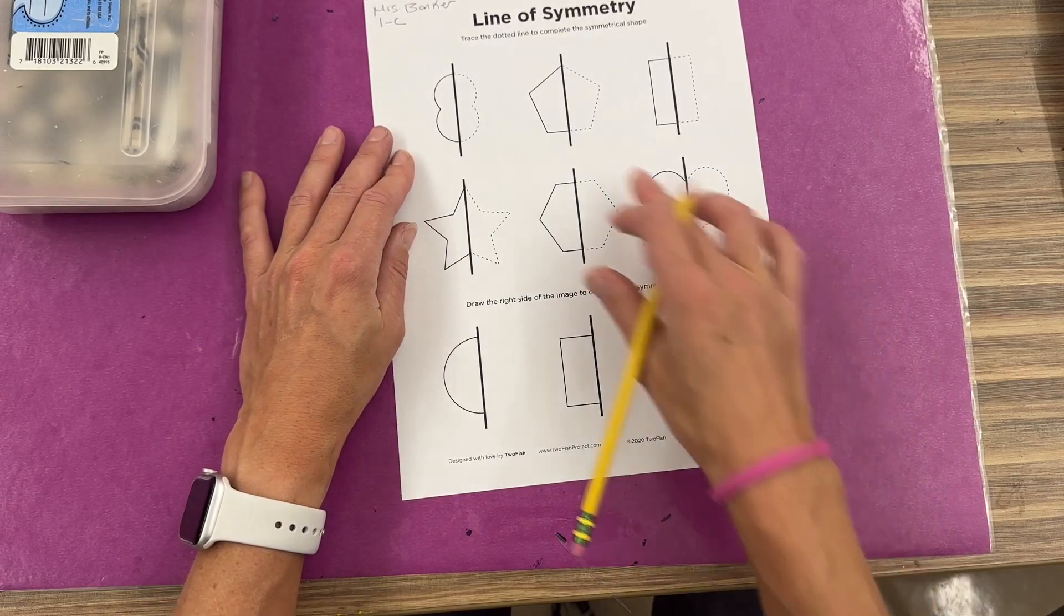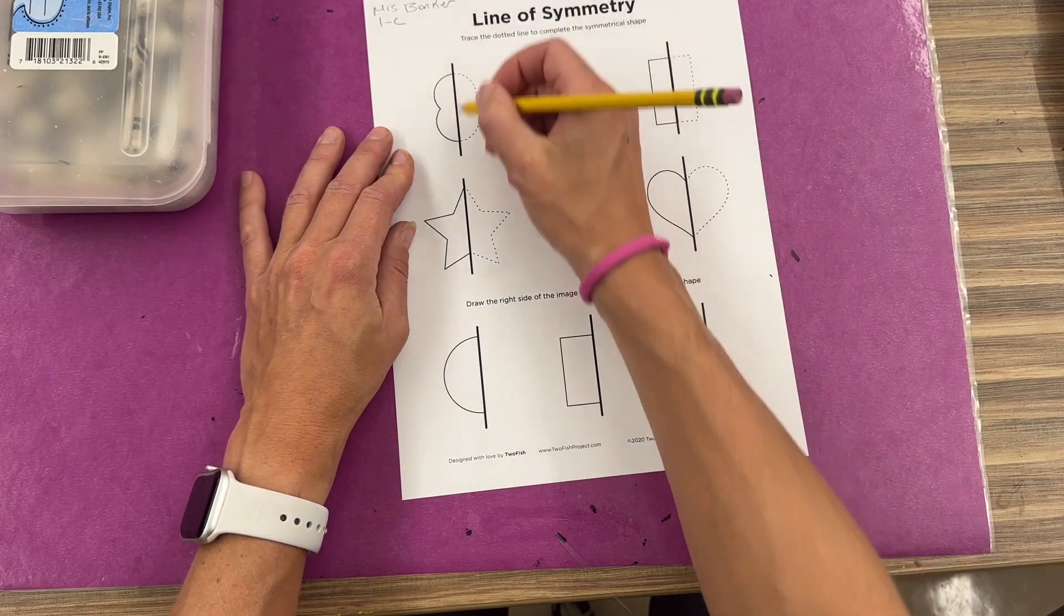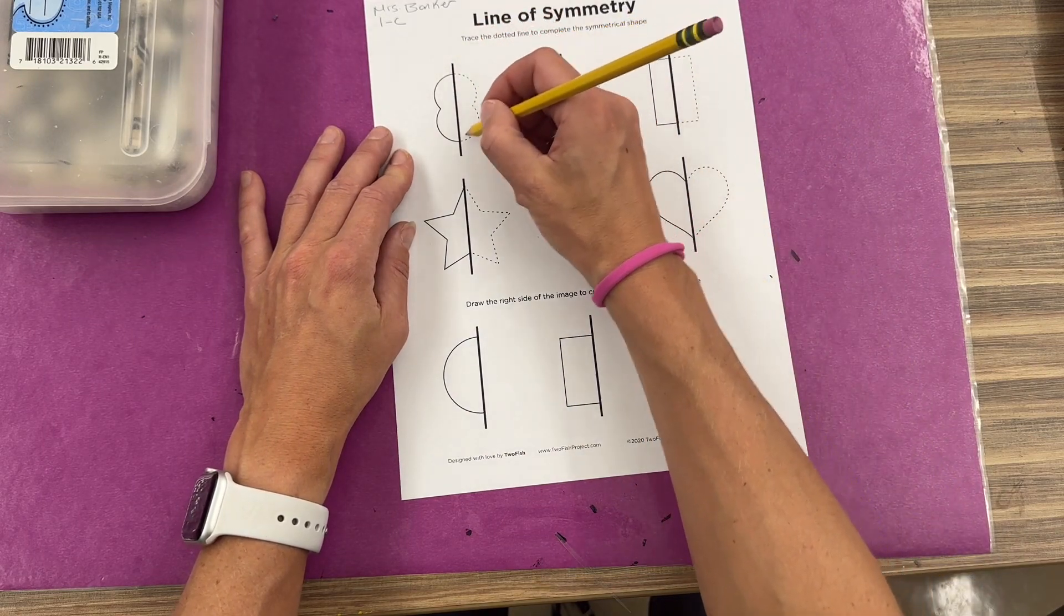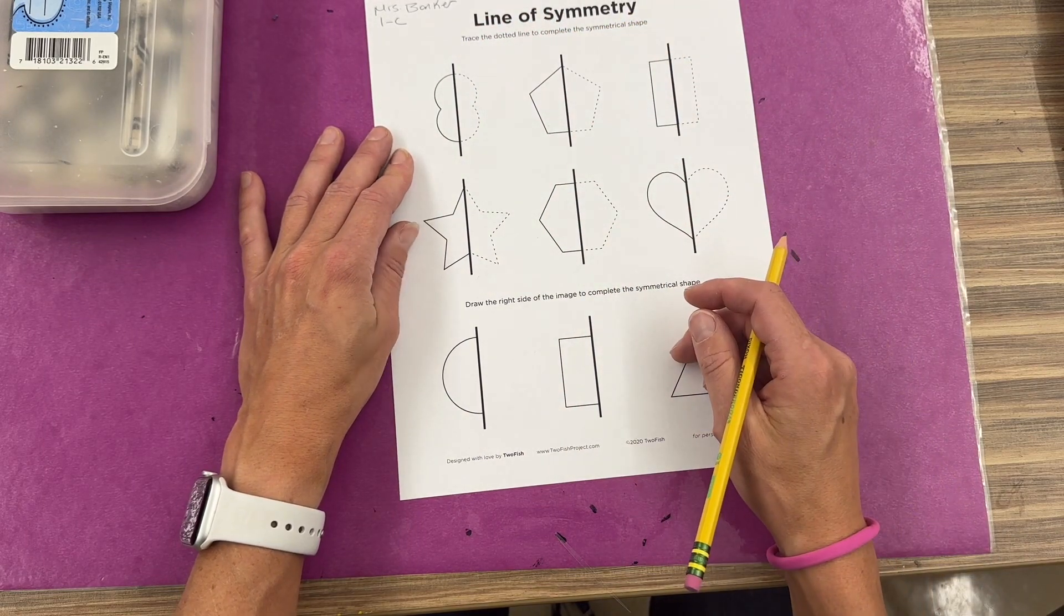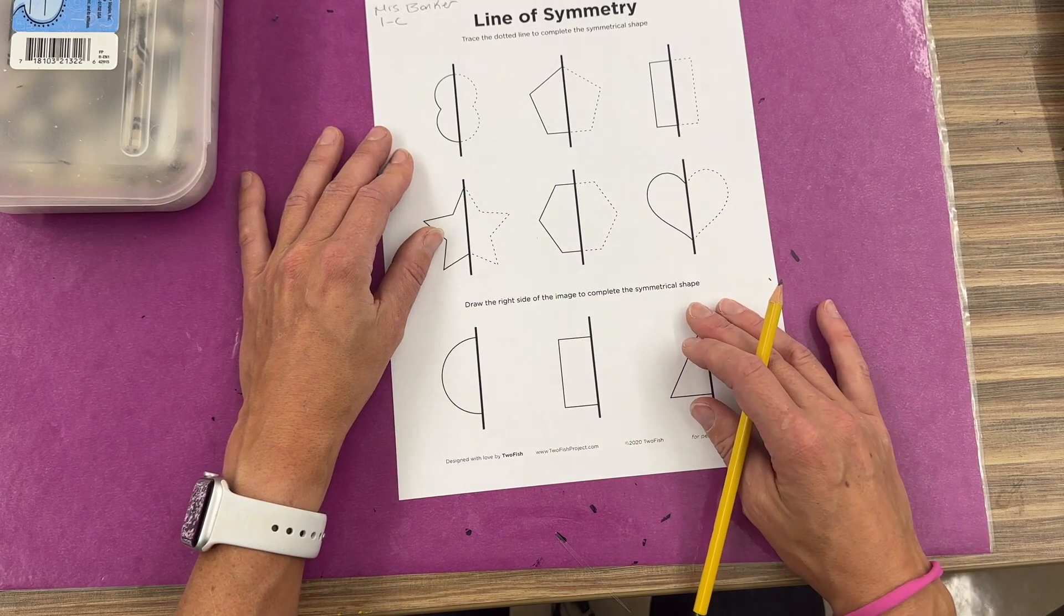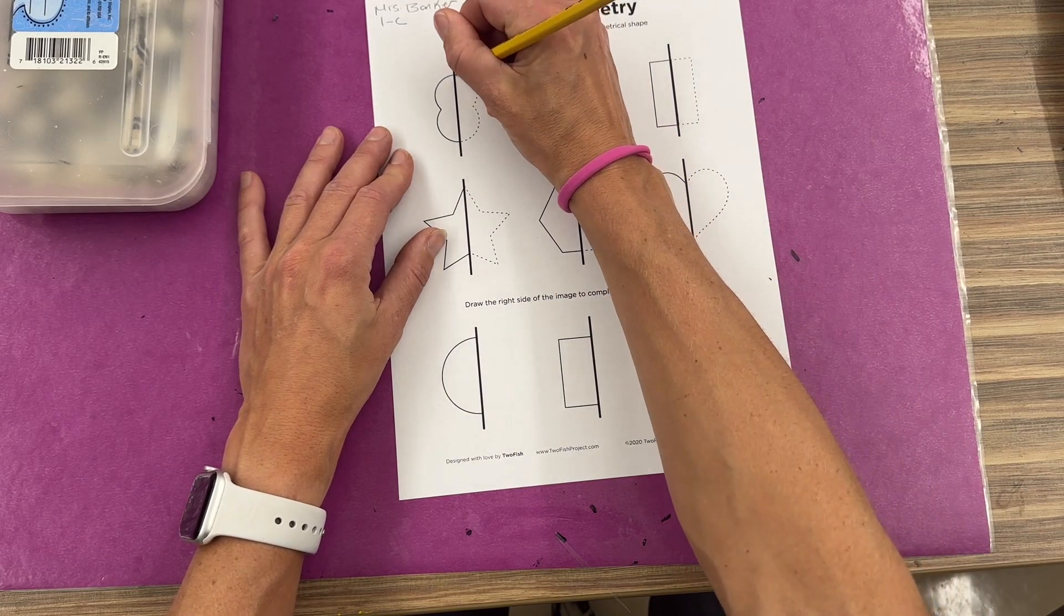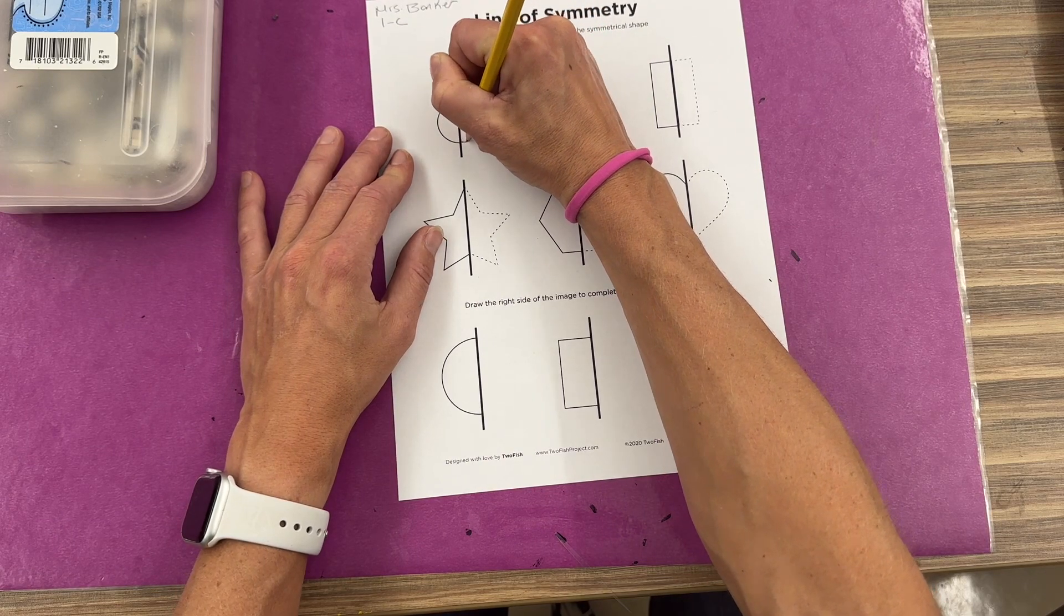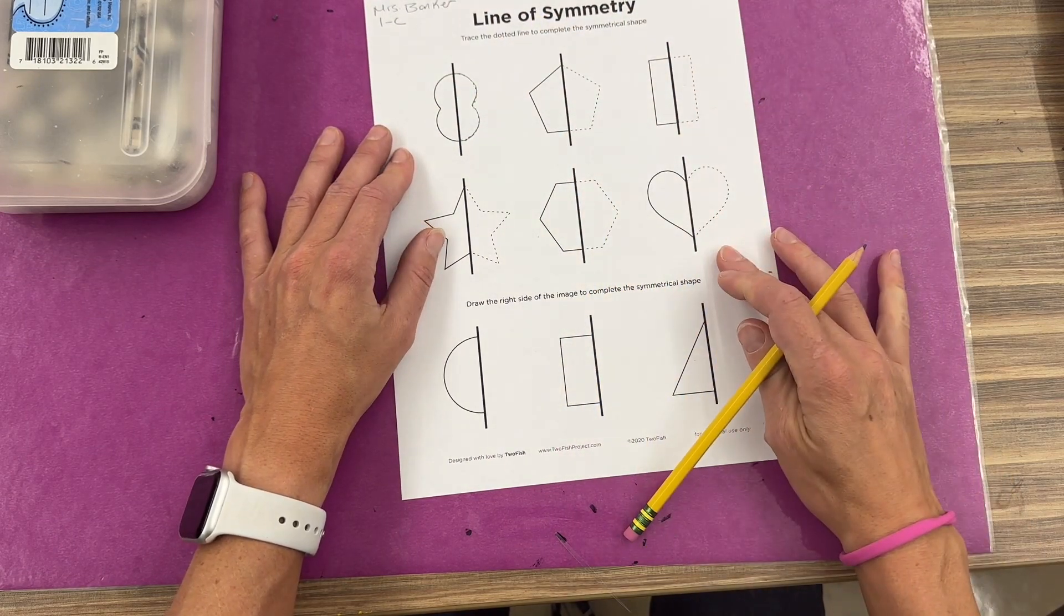Now you are completing the picture. Remember this line is called the line of symmetry and we are going to be completing what would be on the other side. This is also another example of bilateral symmetry. So I'm going to just go over the dotted line nice and neatly and I'm going to complete all of those.